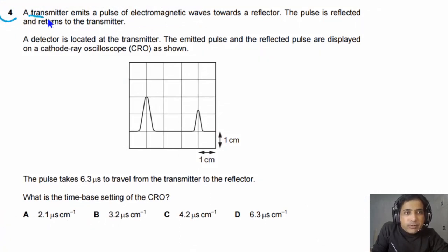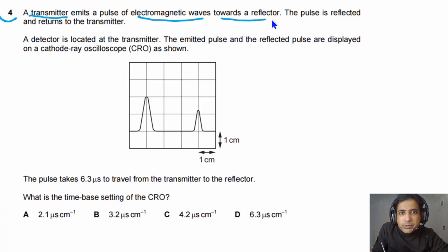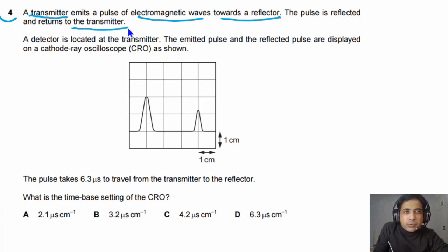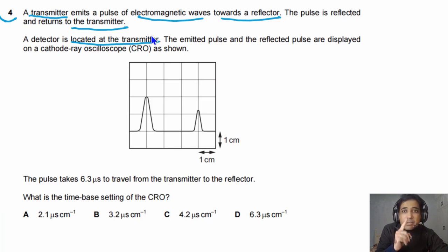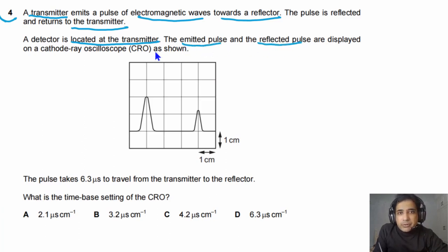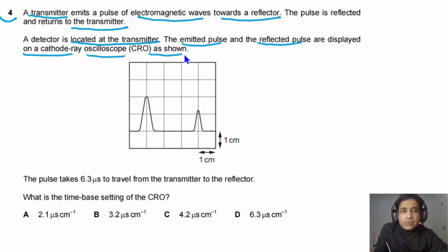For question number 4, it is given to us: a transmitter emits a pulse of electromagnetic waves towards a reflector. The pulse is reflected and returns to the transmitter. A detector is located at the transmitter — meaning the detector and transmitter are at the same place. The emitted pulse and the reflected pulse are displayed on a cathode ray oscilloscope as shown in the figure.